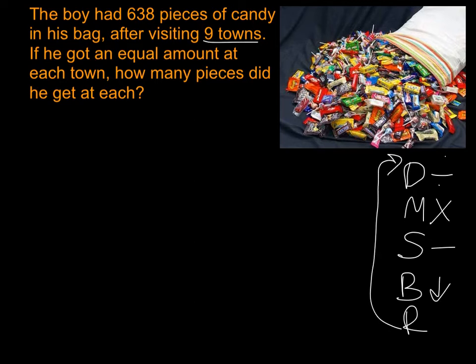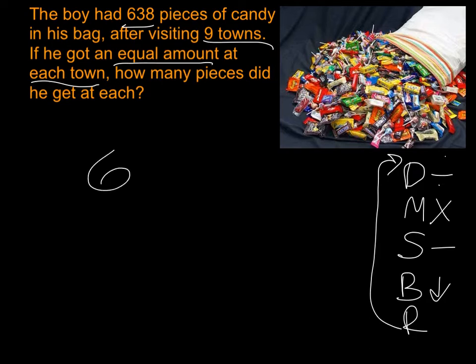We've got nine towns, we've got 638, and we know it's going to be an equal amount at each town. That's a clue that we're long dividing because we have a big amount, 638, divided out over nine towns. So we've got 638 as our dividend on the inside, and nine as our divisor on the outside.